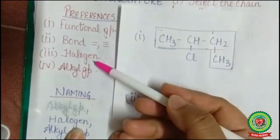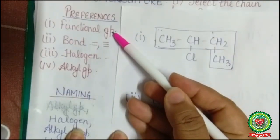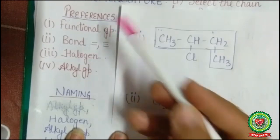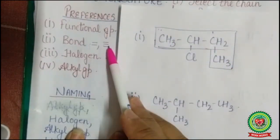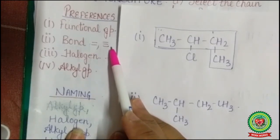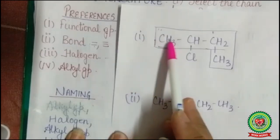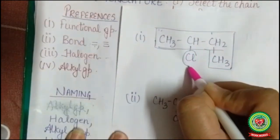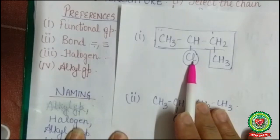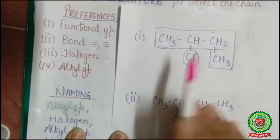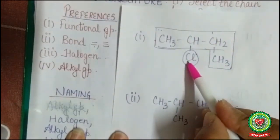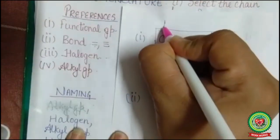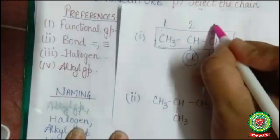After chain selection we have to find the preferences. First preference is functional group — there is no functional group here. Second preference is bond — there are all single bonds between the carbons. Third preference is halogen — Cl, which is chlorine, is present. We will write it as 'chloro'. Now for numbering, the carbon to which chlorine is attached will get the smallest number, so we start numbering from there.